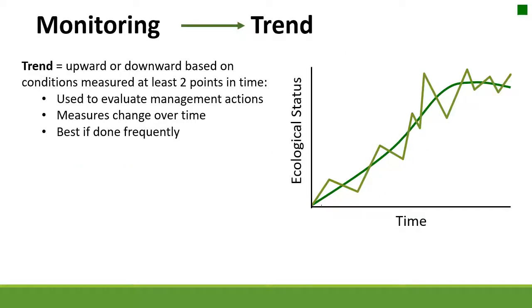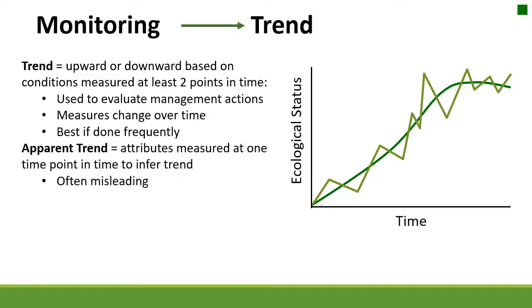Once we have collected at least two points of monitoring data, we can start to understand what the trend is for our site. Trend is just the upward or downward movement of condition over time. A lot of times we talk about trend when discussing management actions — are we moving in the right direction overall? Be cautious of apparent trend, which is just a snapshot view at one point in time. To get a good trend, you want at least two points, and obviously more is better.